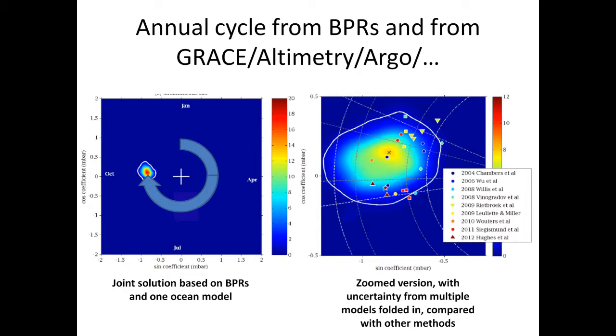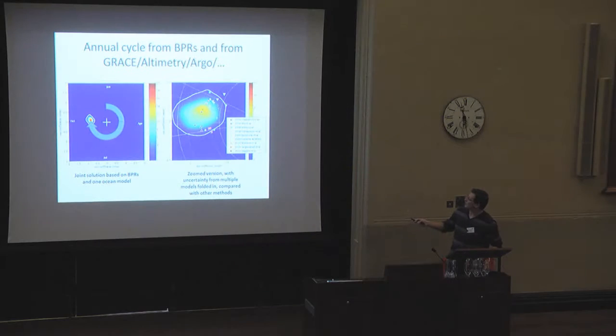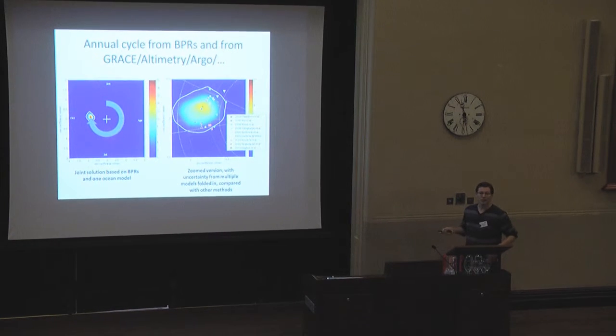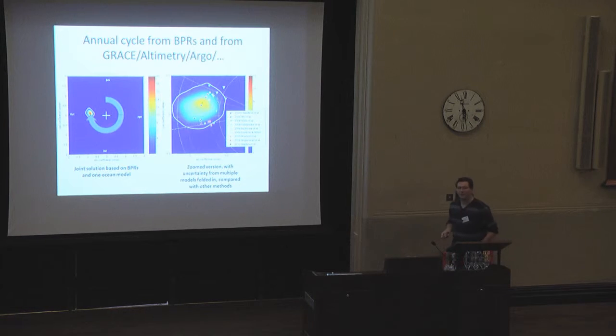This is the PDF that we get, we can actually quantify the errors very nicely now. And it's a peak just after October, an amplitude of a bit less than a millibar, 0.86 I think is our current best estimate. And if we blow that up and also fold in some uncertainty from the model, the ocean model part, by using multiple models here, we get this bullseye. We believe that's where the annual cycle is. And these dots, stars and triangles and things, these are different people's determination of the same thing from GRACE, Argo, altimetry, lots of different methods. So we're getting the same kind of level of accuracy, at least, as those determinations.